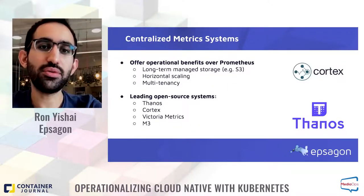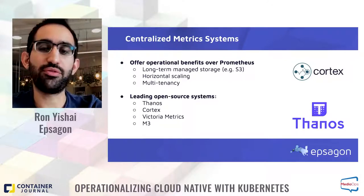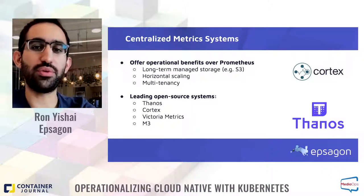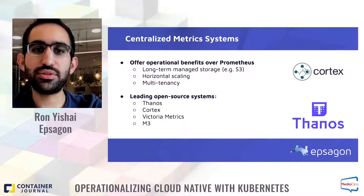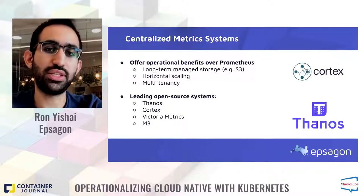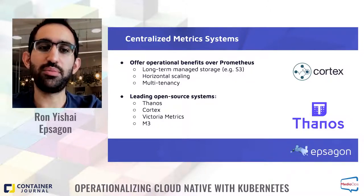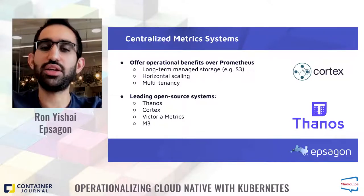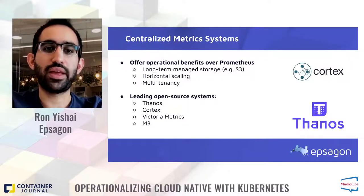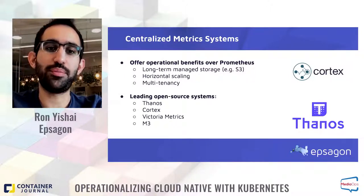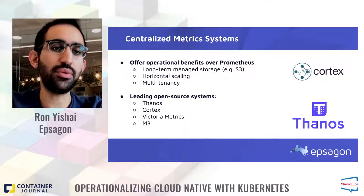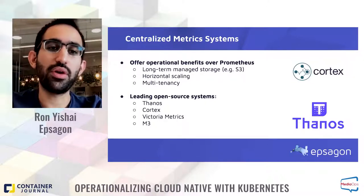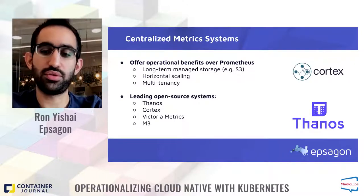It's important to know there are alternatives to Prometheus, and most will be similar in formats and APIs, so they can be added easily. If you have a complex Kubernetes environment — such as one involving multiple clusters, a very high number of metrics, or many applications and teams — you may wish to use a centralized metric system offering benefits like long-term storage, better scaling, or multi-tenancy. It's important to do a market survey of the leading solutions to find one that best matches your use case, as each has different pros and cons.